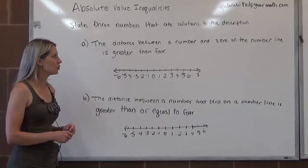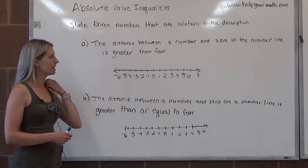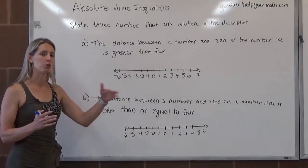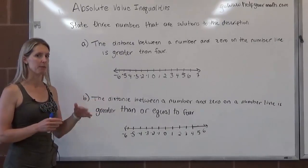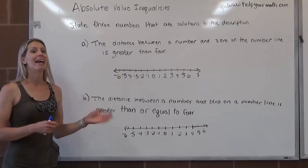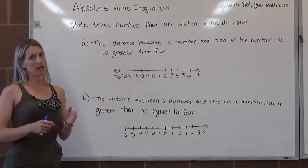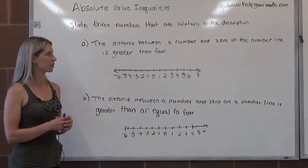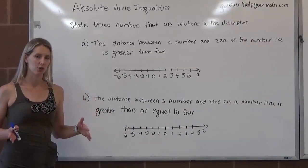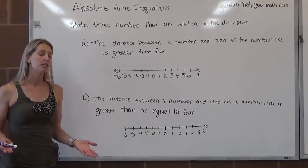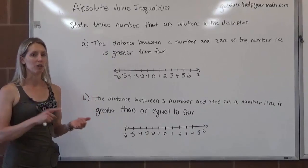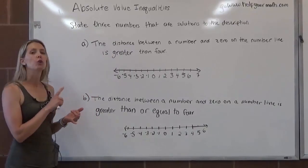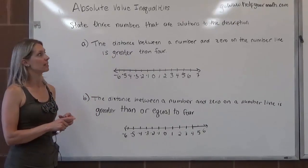In case you're not sure what an integer is, an integer is any whole number — that's 0, 1, 2, 3, 4, 5, 6, 7, and so on — and its opposites: negative 1, negative 2, negative 3, and so on in that direction. Those would be integers. Non-integers include irrational numbers, fractions, and decimals.